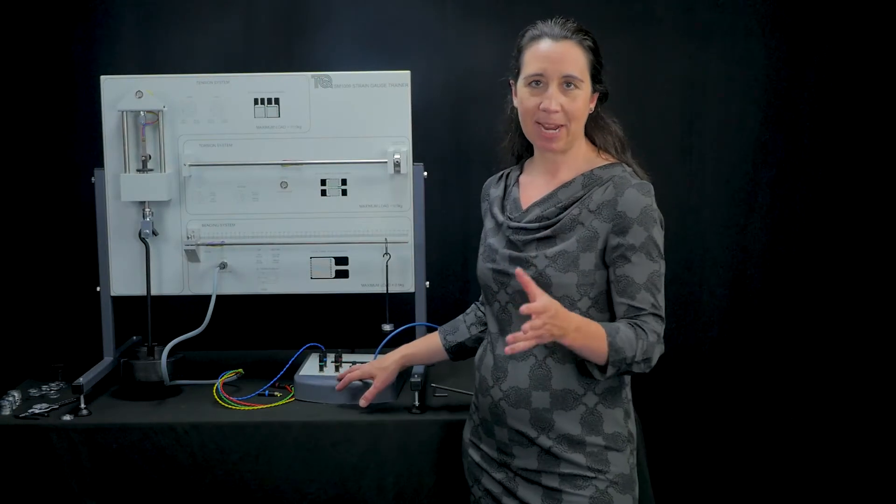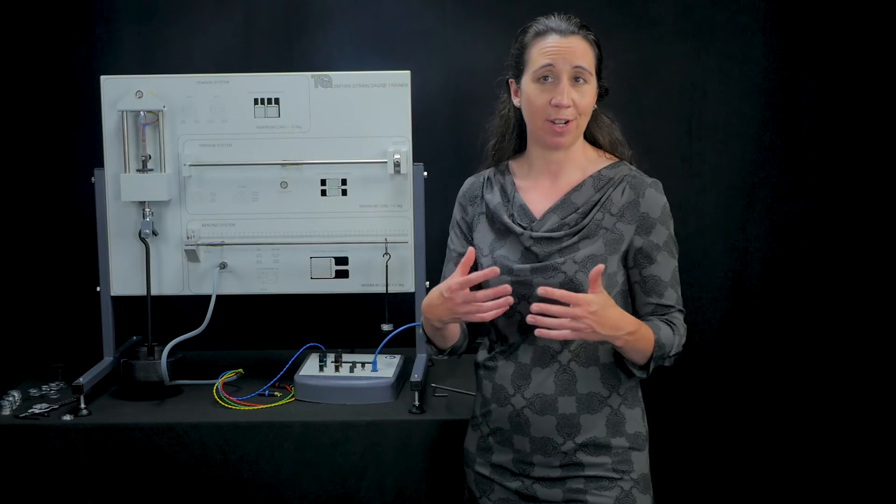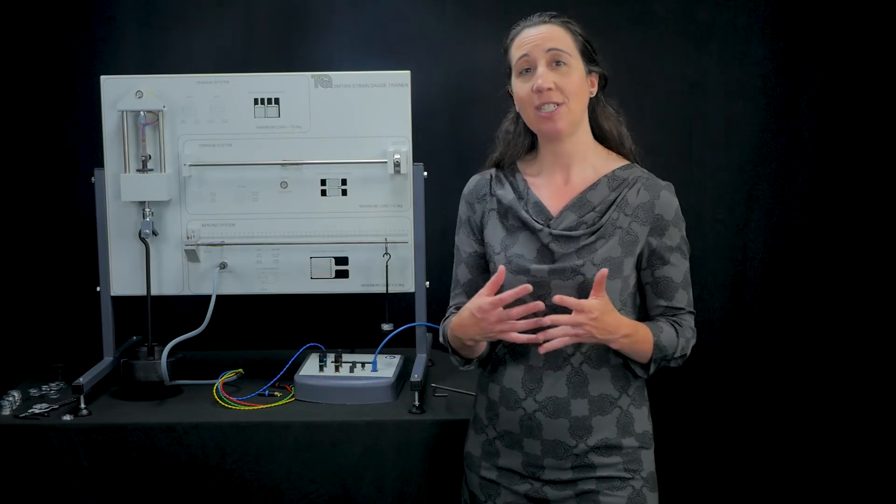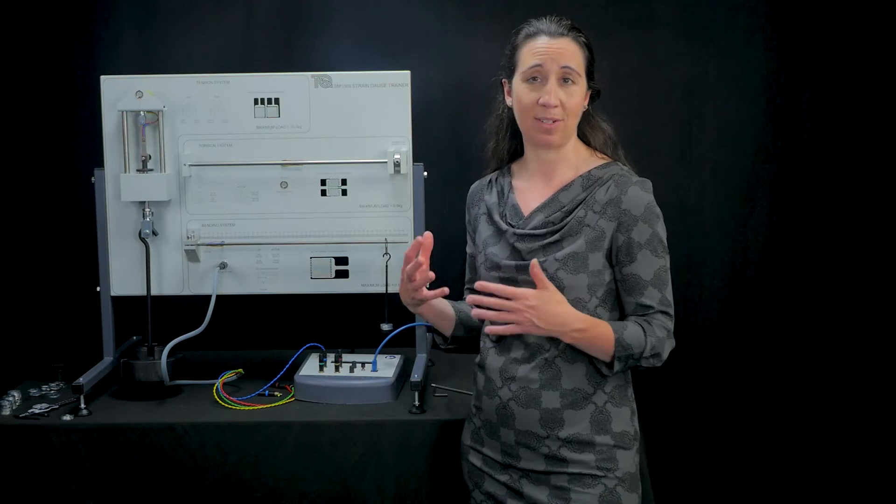The strain display works with and gives correct readings for all bridge connections and different gauge factors. An extra setting on the strain display works with the tension system to prove Poisson's ratio.